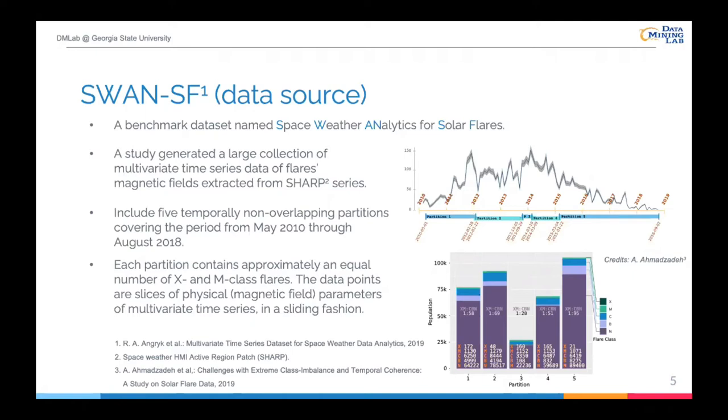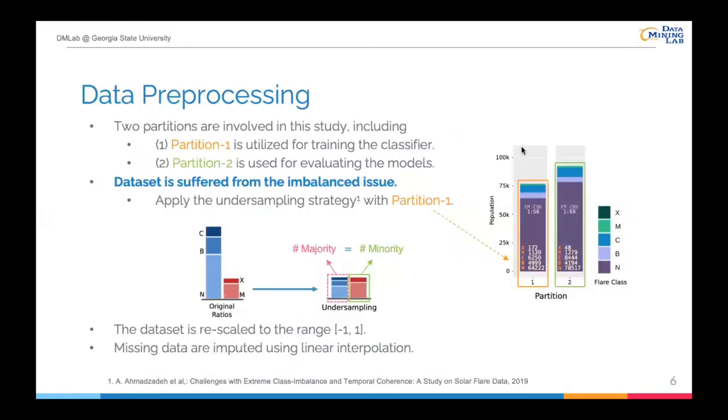Next, I'm going to introduce some details about the data source. The full name of the SWAN-SF benchmark dataset is Space Weather Analytics for Solar Flares. SWAN-SF is a large collection of multivariate time series extracted from SHARP series. This dataset includes five time-true non-overlapping partitions over eight years. The partitioning idea is to let each partition contain approximately an equal number of X and M class flares. In this undersampling method, the number of instances of the majority classes and the minority classes become equal while the ratio of the individual classes are preserved from the original dataset. In addition, the two selected partitions are rescaled into the range of minus one to one, which is required by the imaging algorithm utilized in this study. Moreover, missing values are imputed with linear interpolation.